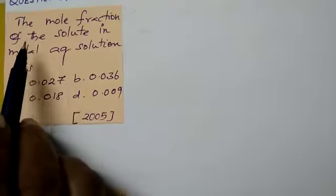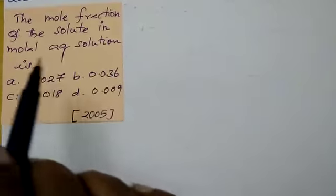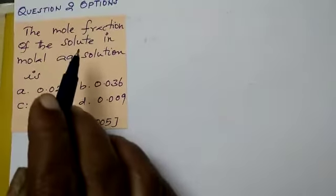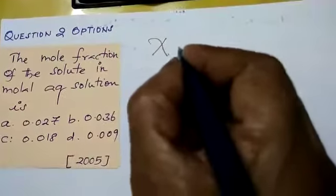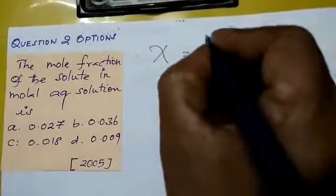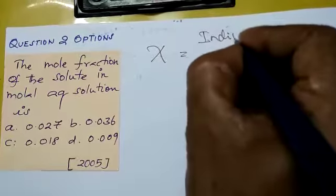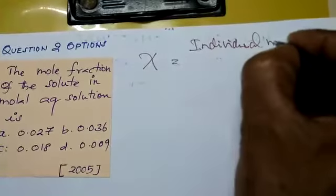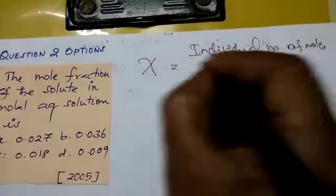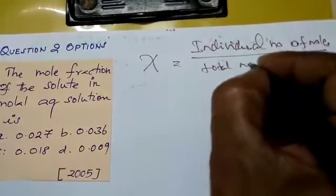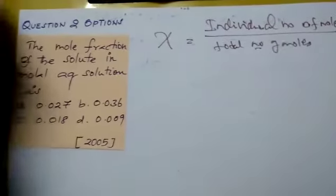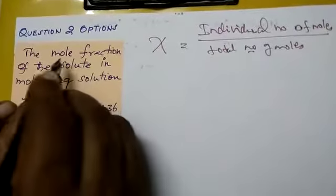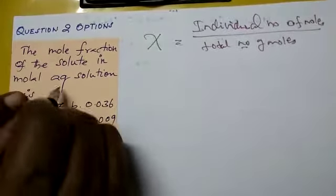The mole fraction of the solute in 1 molar aqueous solution is — they are asking mole fraction in a molar aqueous solution. The mole fraction, zeta, is equal to the number of moles of the individual component divided by the total number of moles. This is the formula to find out the mole fraction.